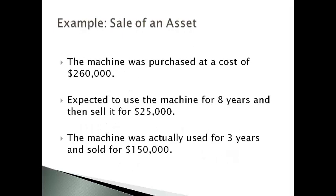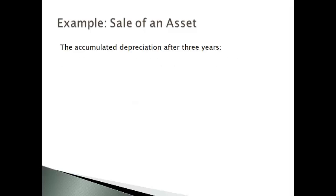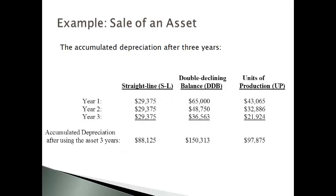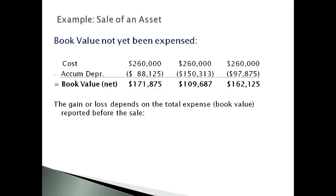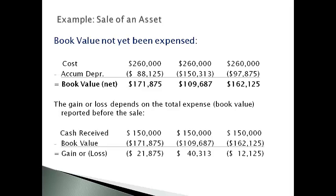Consider an example of an asset sold to illustrate the impact of an incorrect estimate on the gain or loss. This machine was purchased at a cost of $260,000. The company expected to use it for 8 years and sell it for $25,000, but the machine was actually used for only 3 years and sold for $150,000. The first step is to compute accumulated depreciation after 3 years — the total varies based on which method is used. The cumulative depreciation determines book value at the time of sale, which then determines the gain or loss. The higher the depreciation expense, the lower the book value and the higher the gain; the lower the depreciation expense, the higher the book value and the higher the loss.